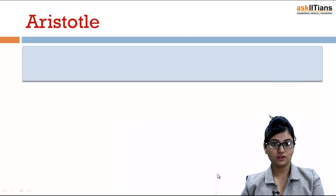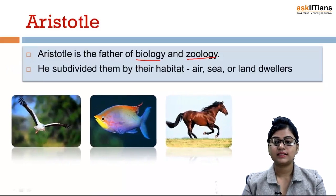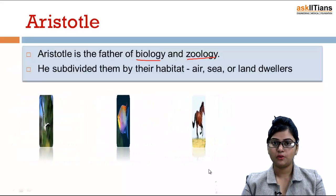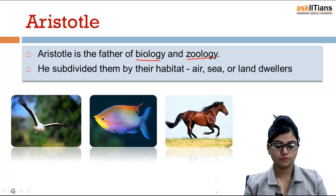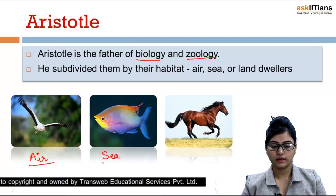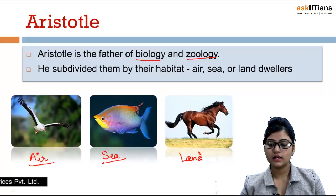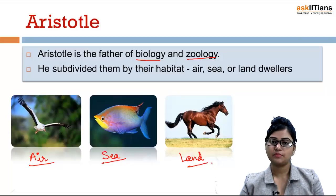First we will take the scientist Aristotle. Aristotle is the father of biology and zoology — he is the father of both. He subdivided all the plants and animals by their habitat, like air, sea, or land dwellers. For example, a bird is an air dweller, fish is a sea dweller, and a horse is a land dweller. So based on the habitat of each and every organism, Aristotle subdivided them.